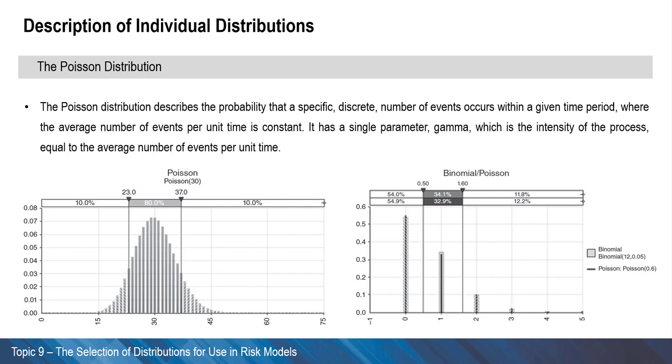The distribution is often used to represent the probability of outcomes for situations such as the number of people arriving in a queue per minute or number of traffic accidents in a town per day.